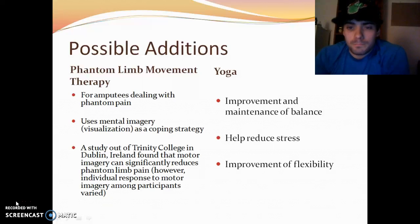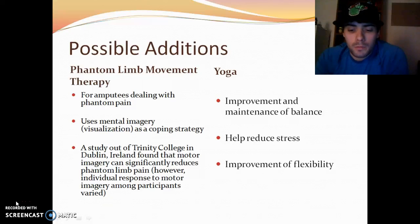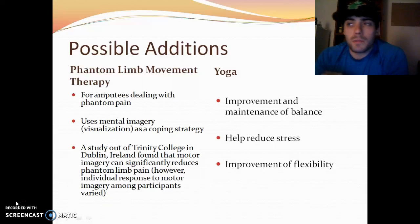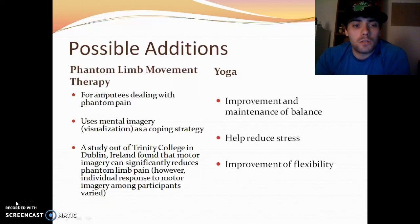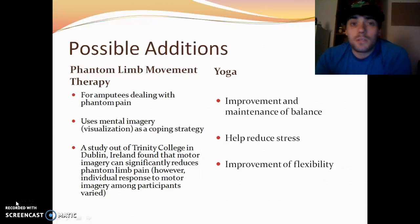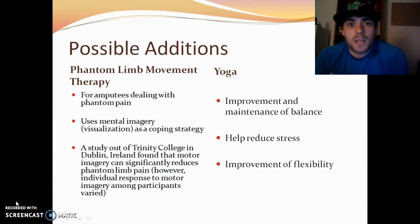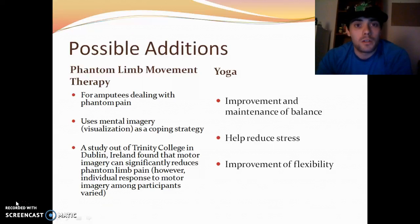For additional physical health considerations, phantom limb movement therapy is useful for amputees dealing with phantom pain — perhaps when medication isn't working or they want to try something else. This uses mental imagery or visualization as a coping strategy. A study out of Trinity College in Dublin, Ireland found that motor imagery can significantly reduce phantom limb pain. However, all participants had different reactions, so it's not for everyone and doesn't always work, but it's worth a try.